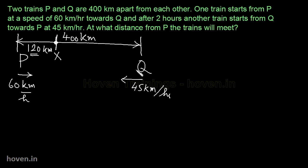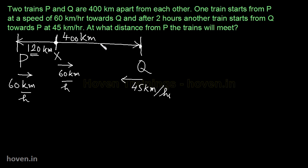तो अब हम कह सकते हैं कि एक train x से चली 60 km per hour पे और एक Q से चली 45 km per hour पे, और यह साथ में चलती हैं। अब हम पता लगाएं कि यह कब मिलेंगी। scheme यह है कि पहले time पता करेंगे, फिर उससे distance पता चल जाएगा कि 60 वाली ने कितना distance cover किया।